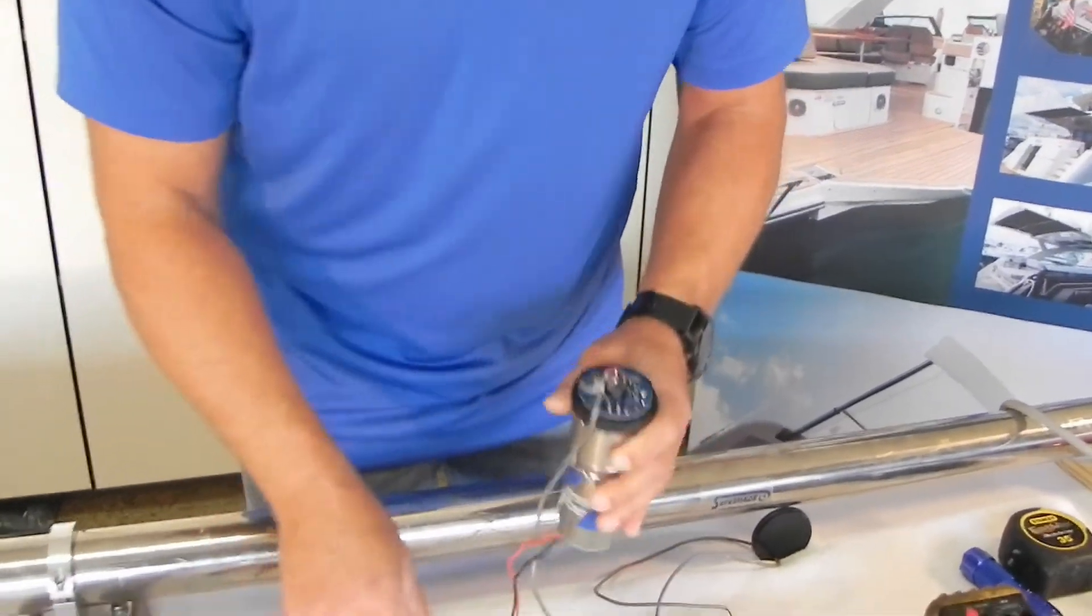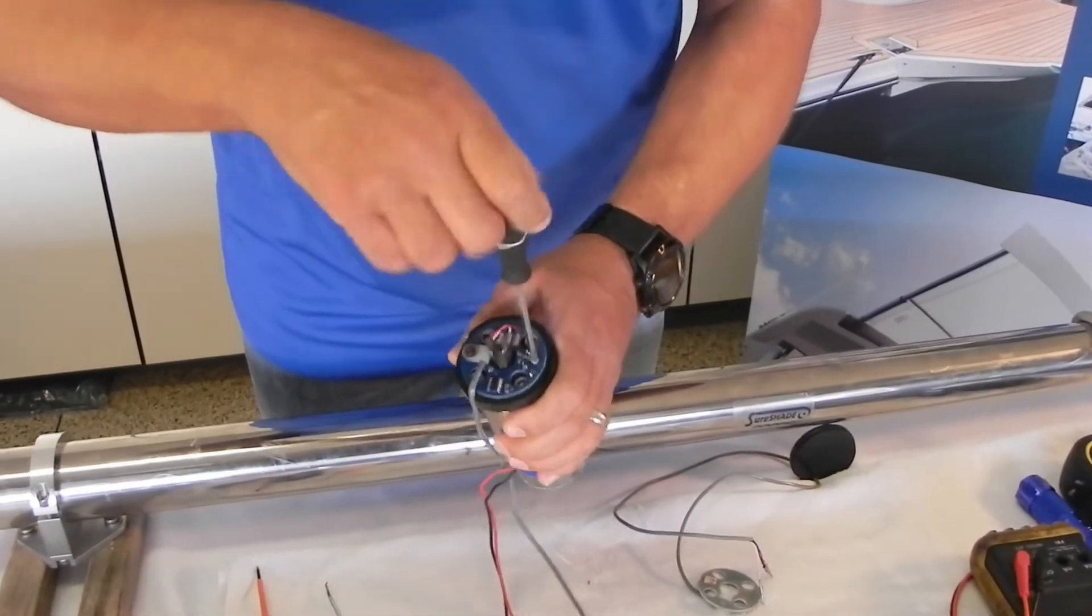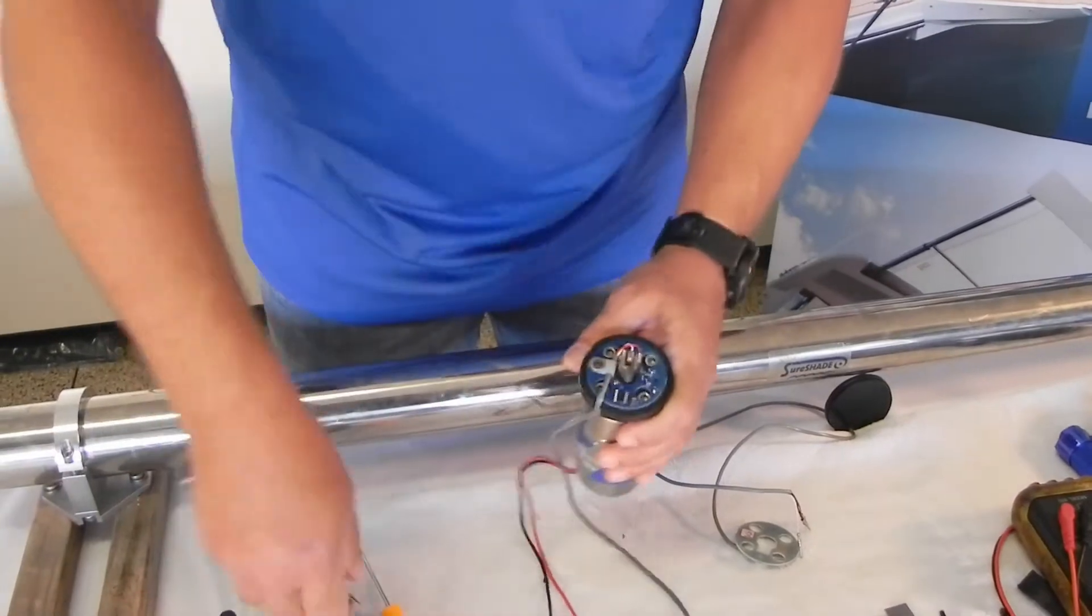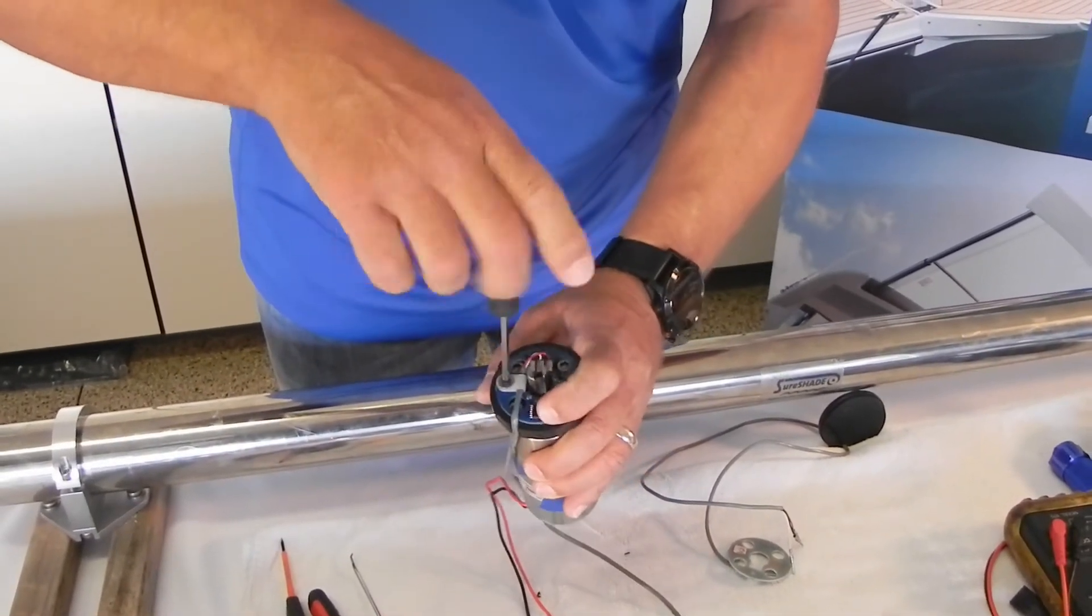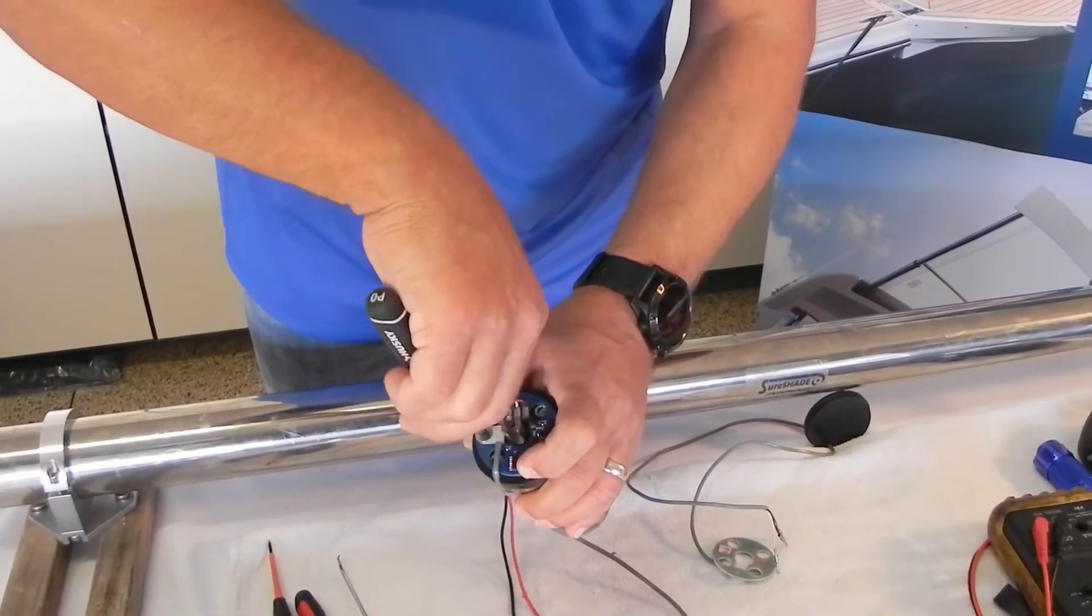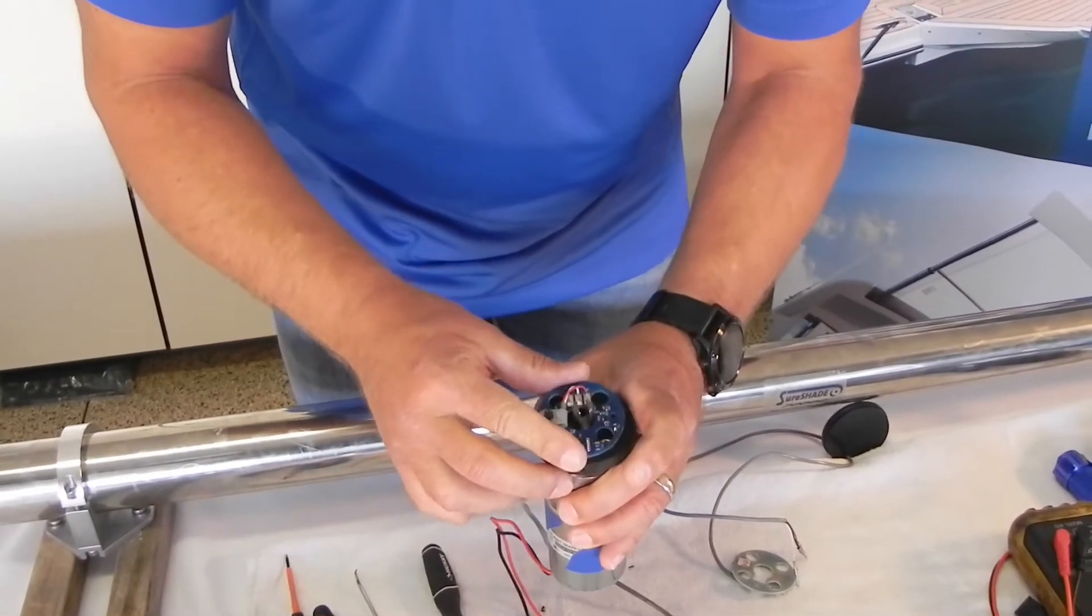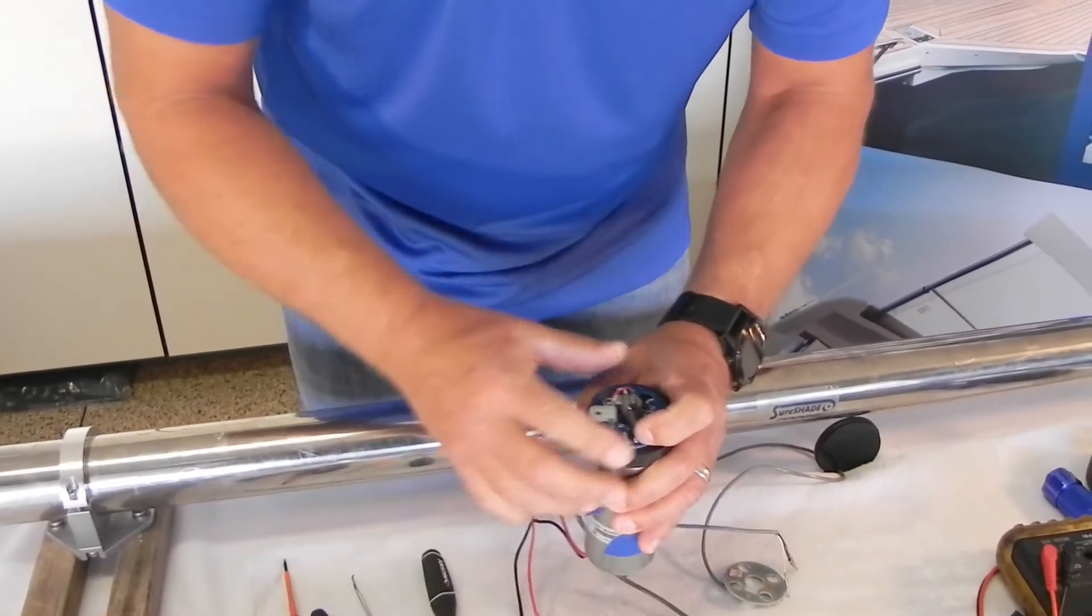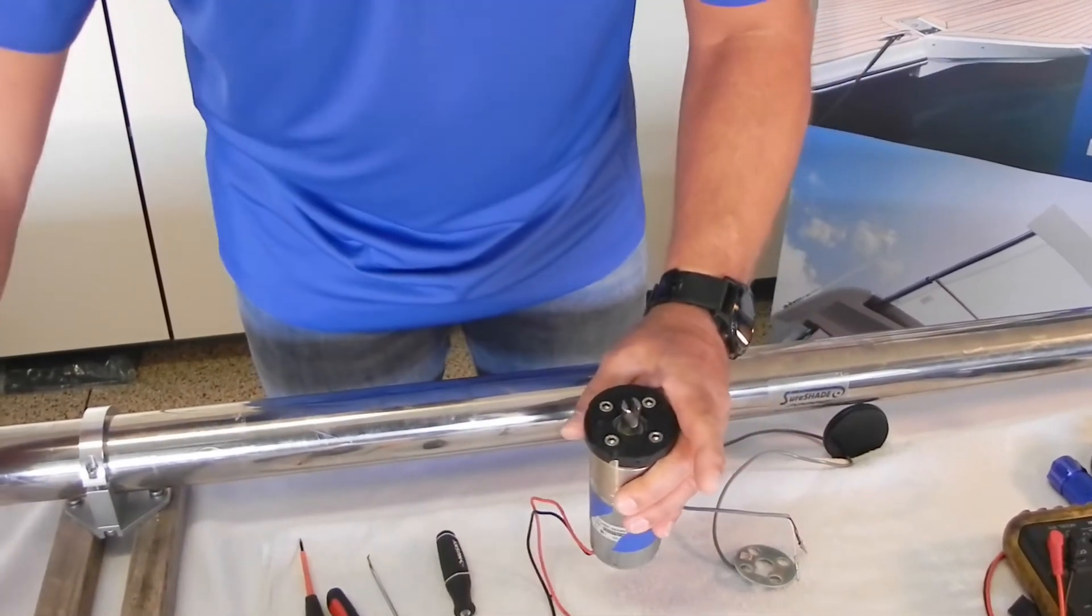So go ahead and remove that. Set that down. Next step is you just get your Phillips head screwdriver. You're going to remove two screws. Just take note again, the orientation, the way it's oriented on the motor. Take this off, set it aside.